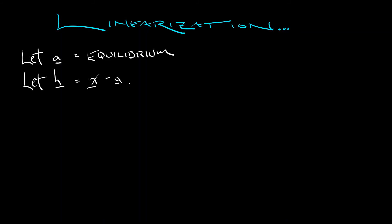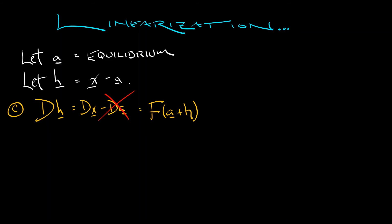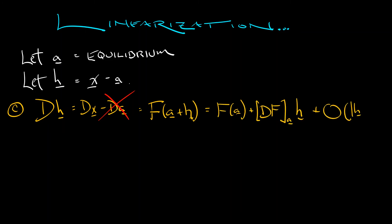H is like a perturbation away from the equilibrium. In continuous time, we have the induced dynamical system on h given by differentiating h equals x minus a. So dh equals dx minus da. Since a is an equilibrium, its derivative is zero. Now I'm going to look at the derivative of x as being f of x, which is f of a plus h. Using a multivariate Taylor expansion, f of a plus h equals f of a plus the derivative of f at a times h, plus terms that are quadratic in h and higher.